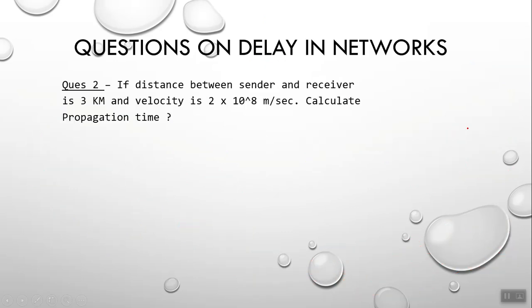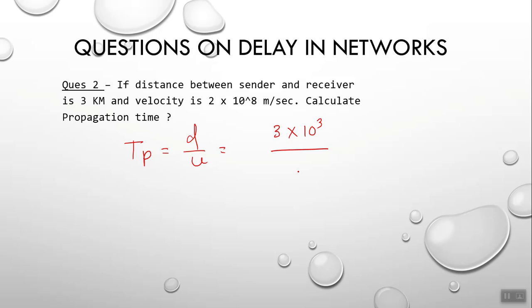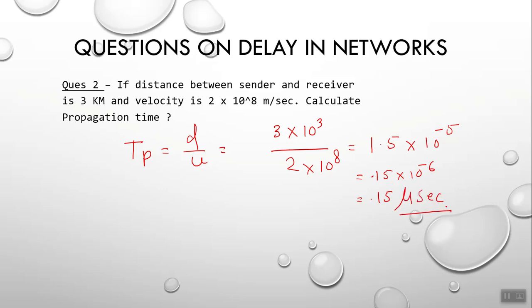Example: if the distance between sender and receiver is 3 km and velocity is 2×10^8 m/s, calculate propagation time. tp = d/v = (3×10^3) / (2×10^8) = 1.5×10^(−5) seconds = 0.15×10^(−6) seconds = 0.15 microseconds.